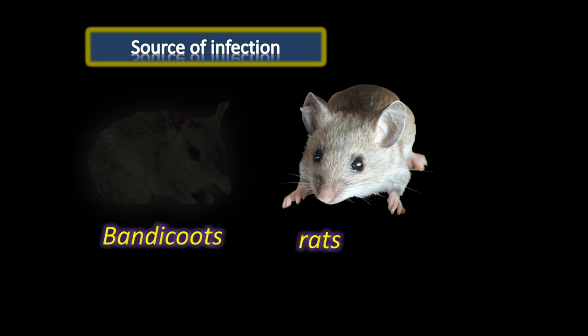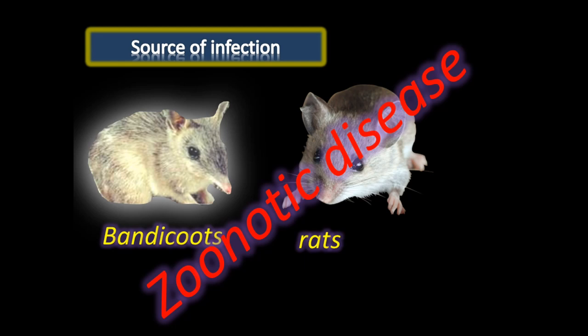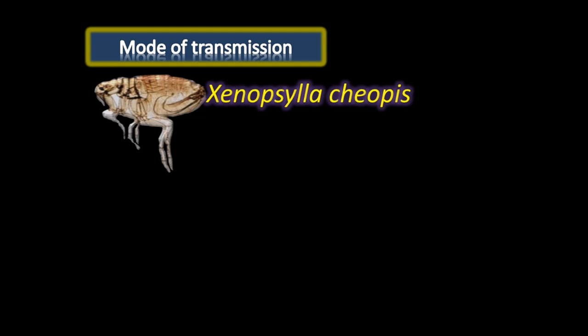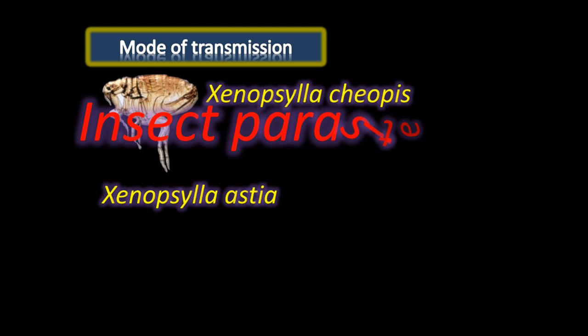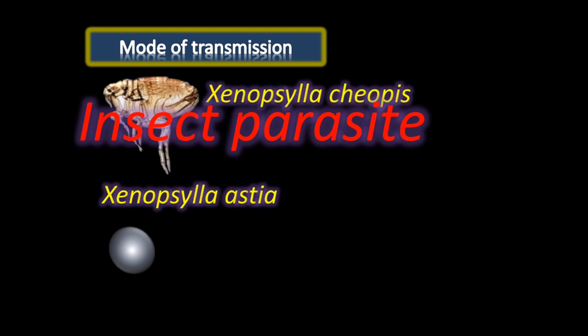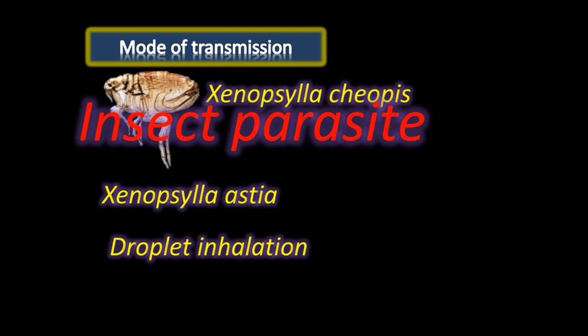The source of infection: rodents are the main reservoirs, including rats and bandicoots. Since it spreads from animals, it is also called a zoonotic disease. Plague spreading from one human to another is called pneumonic plague. The mode of transmission is by the bite of the rat flea. Two subspecies exist: Xenopsylla cheopis in North India and Xenopsylla astia in South India. In pneumonic plague, infection is transmitted person to person by cough or droplet inhalation.